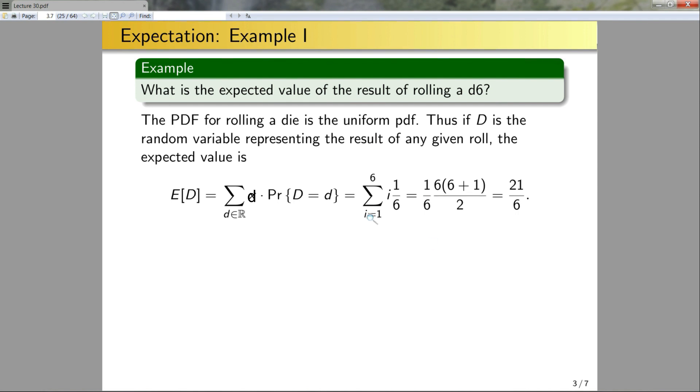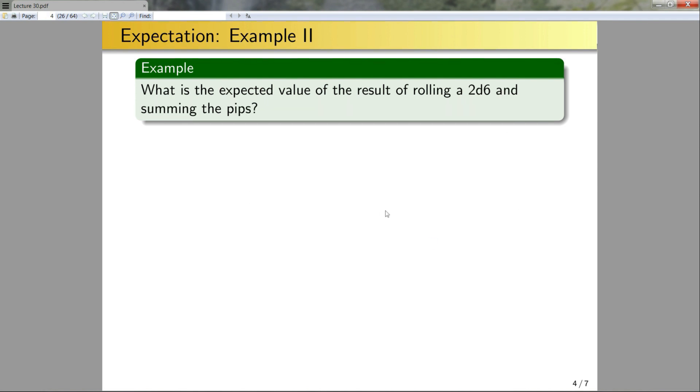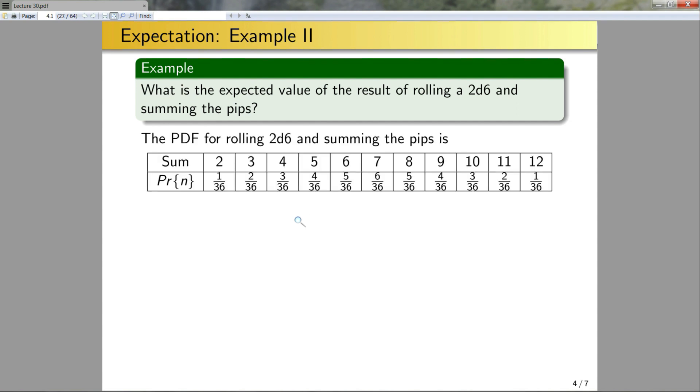Let's look at a slightly more complex question. What is the expected value of the result of rolling 2d6 and summing the pips? So why is this problem more complex? Well, we know the PDF of rolling 2d6 and then summing the pips is not uniform. So this makes this problem a little bit more complex, but it's still pretty straightforward. So again, the PDF for rolling 2d6 and summing the pips is this. We derived this in a previous lecture. I forgot exactly which one, but it was pretty early on.